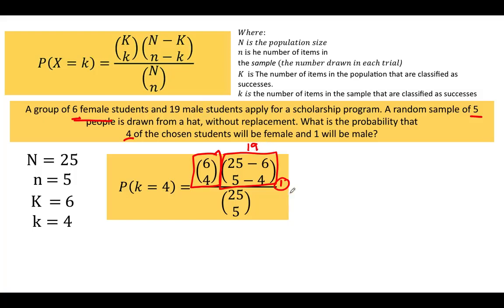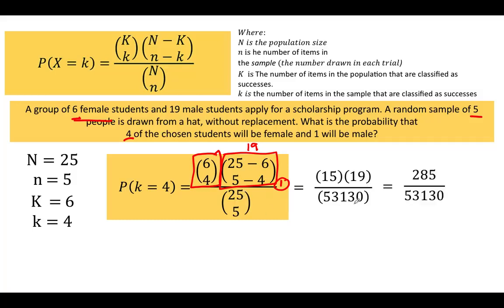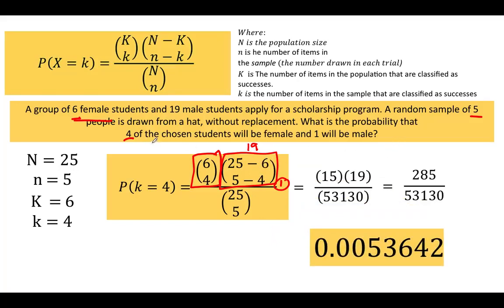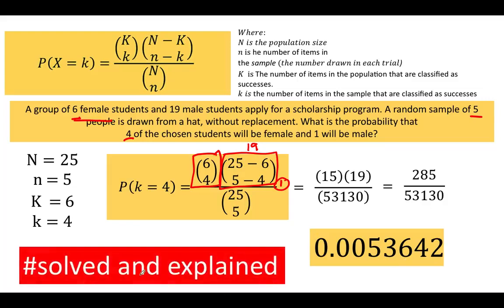Simplifying: 6 combined 4 at a time is 15, 19 select 1 is 19, and 25 combined 5 at a time is 53,130. This gives 285 over 53,130. The probability that 4 of the chosen students will be female and 1 will be male is 0.0053642. This problem is now solved and explained.